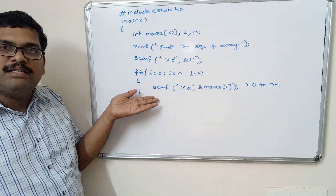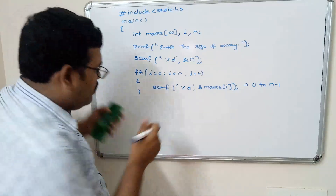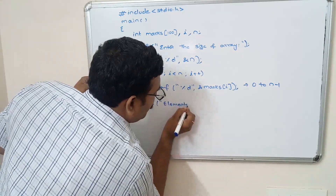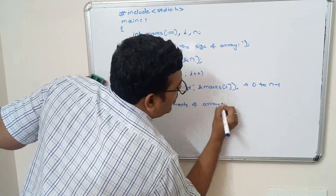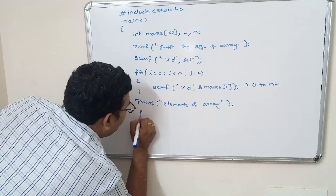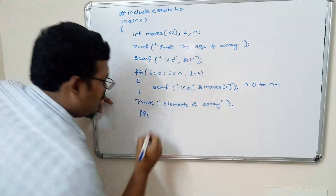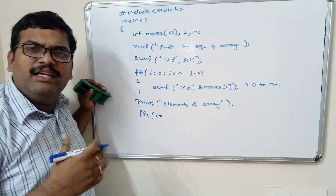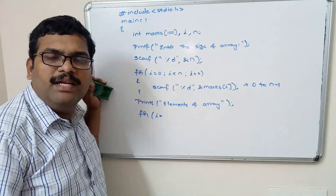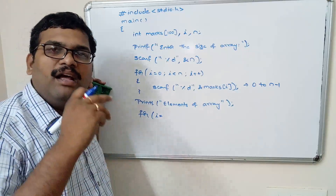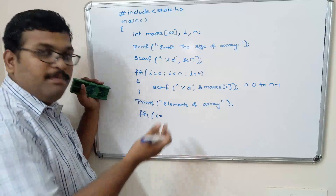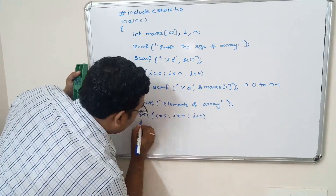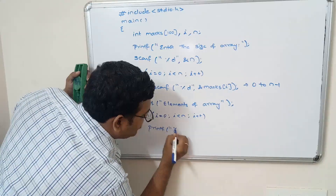After reading the elements, we want to print the same elements on the screen. Printf: elements of array. For printing, we use the same logic — an iterative statement. For i equal to 0, i less than n, i plus plus — printf percentage d marks of i. Instead of printing individual elements, we write a general format and repeatedly execute the same statement.